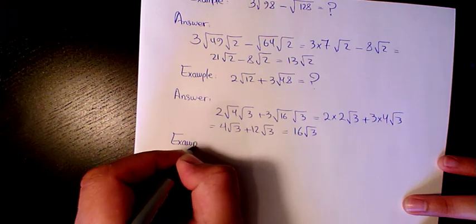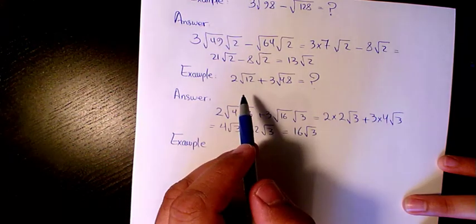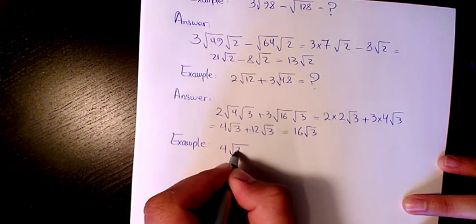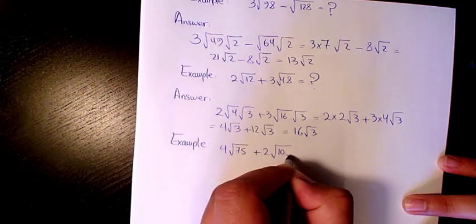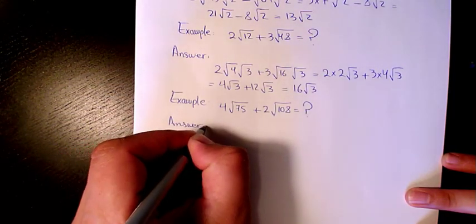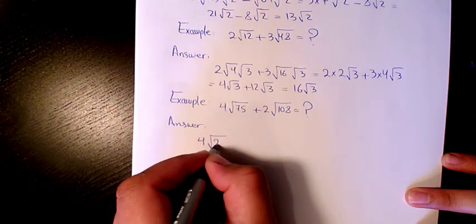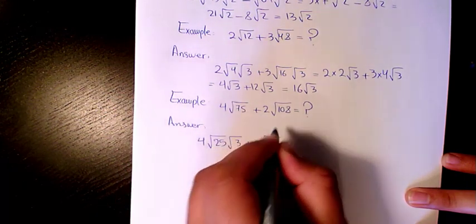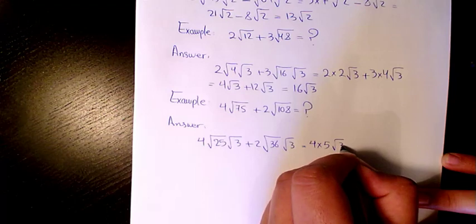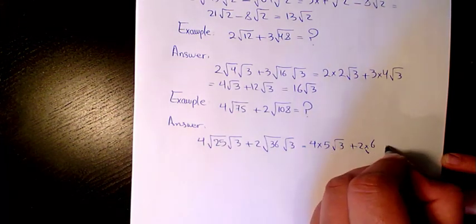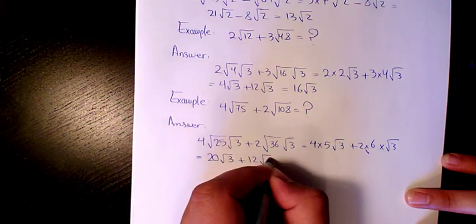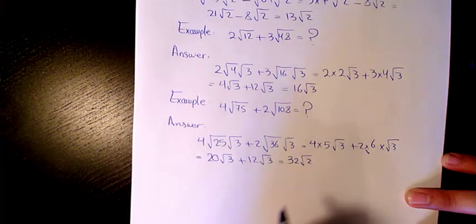Next example: 4√75 + 2√108. The answer is 75 is 25 × 3, 108 is 36 × 3. That will make it 4 × 5√3 + 2 × 6√3, which makes it 20√3 + 12√3, makes it 32√3.